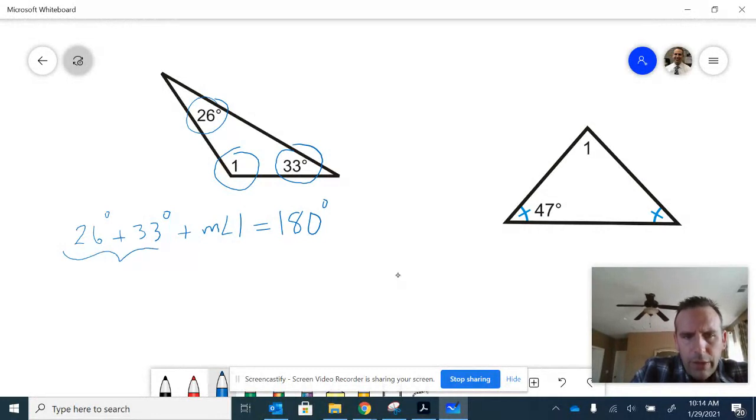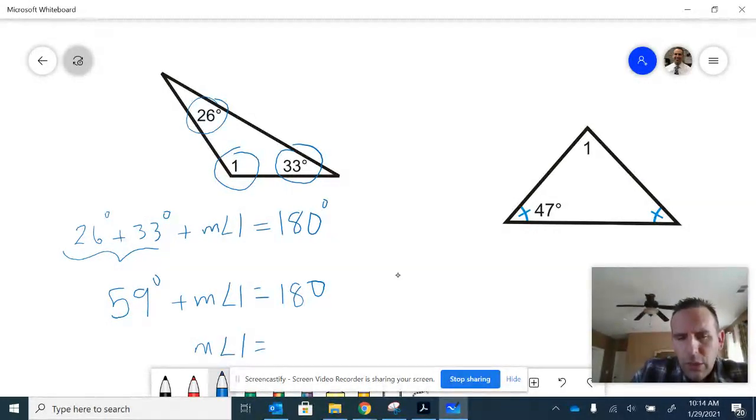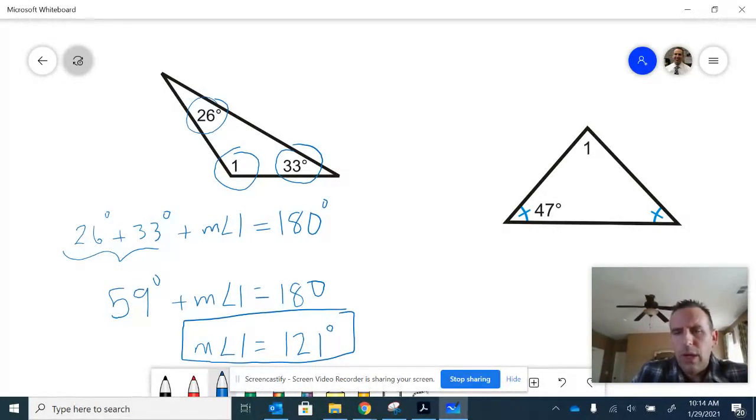If we figure out the sum of those two together, 26 plus 33 would be 59 degrees plus the measure of angle 1 is 180 degrees. So to figure out the measure of angle 1, we can just subtract 59 from 180, which would be 121 degrees. And you can check that on your calculator as well.